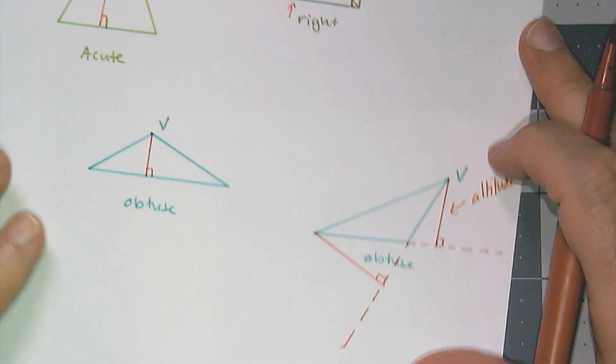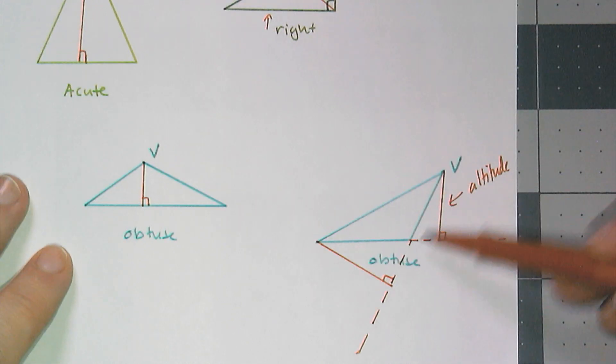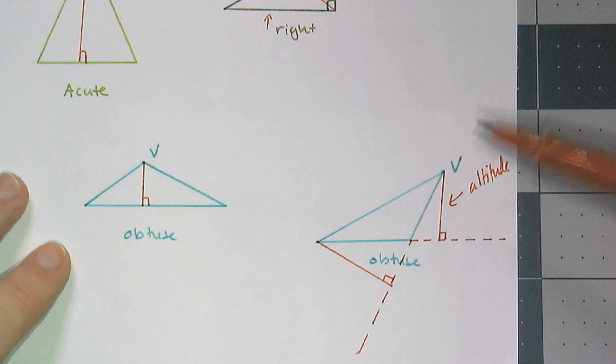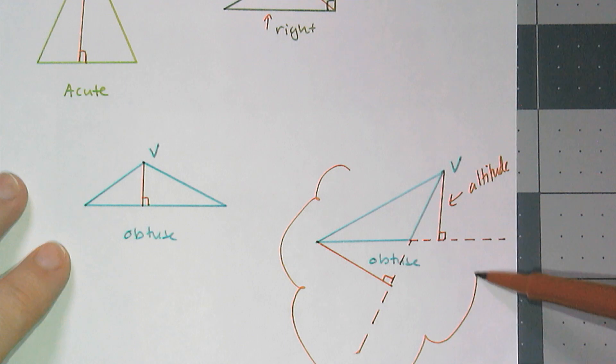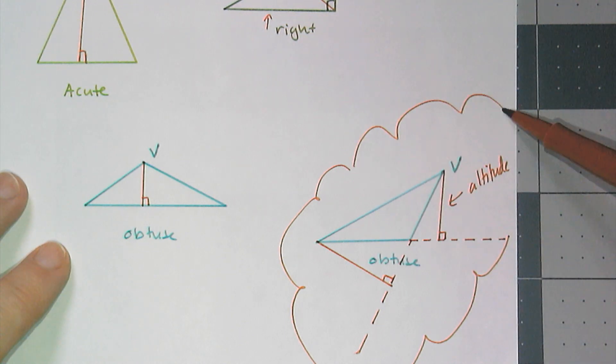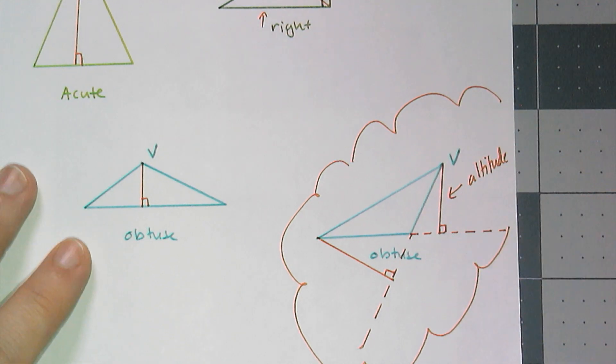And so the thing that you have to remember is that in an obtuse triangle, two of the altitudes are going to be outside. And this is going to come up several times. And you have to make sure that you remember this fact about the altitudes of obtuse triangles.